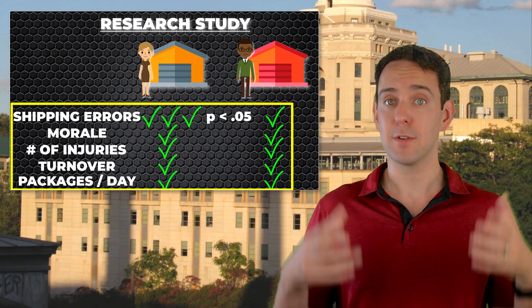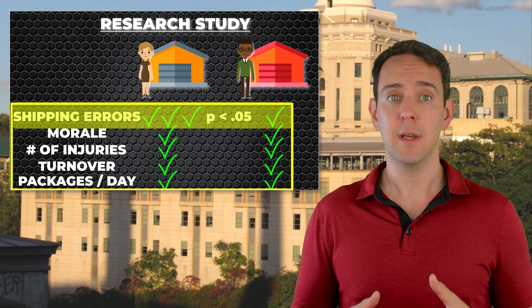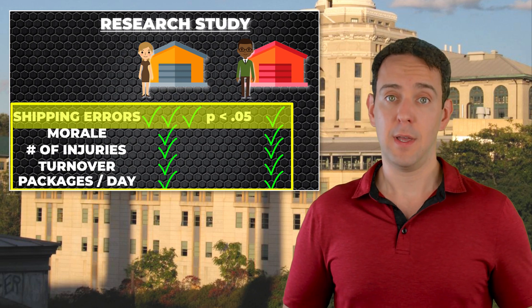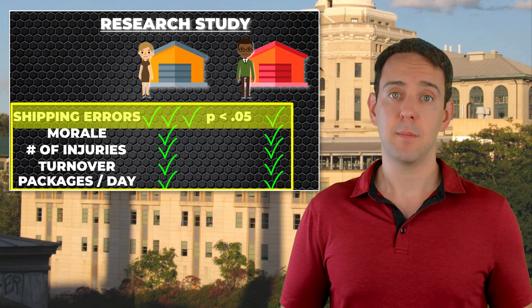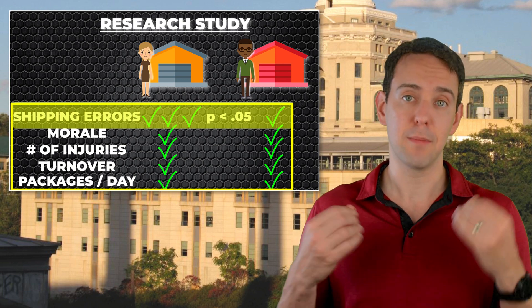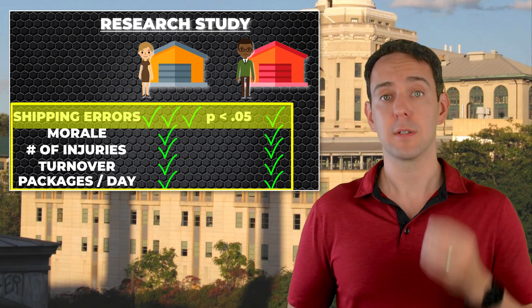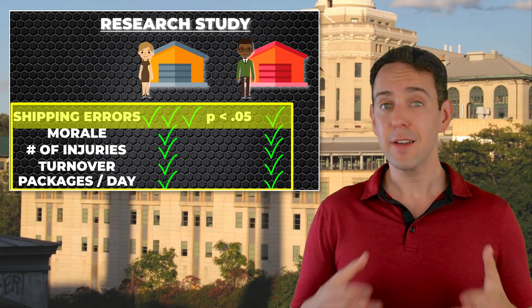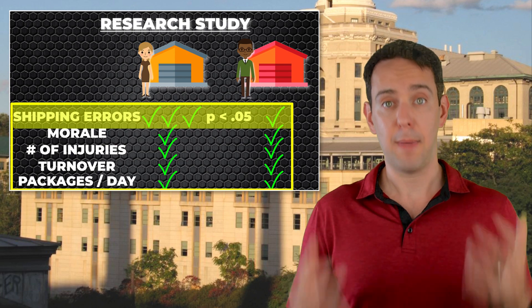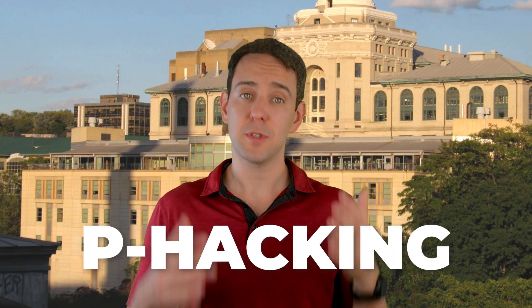In focusing on just the one shipping error metric, the consultants are claiming they're playing the version of the guessing game where you pre-pick which round counts — but in reality they are playing the version where any correct pick is a win. In that latter version, the likelihood of winning by complete chance is 22.6%. The consultants are claiming statistical confidence in a difference across warehouses in shipping error rates, basing that on a p-value of 0.05 or less. But that p-value only reflects statistical confidence if shipping error rates were the only metric that would make them feel they learned something about these warehouses.